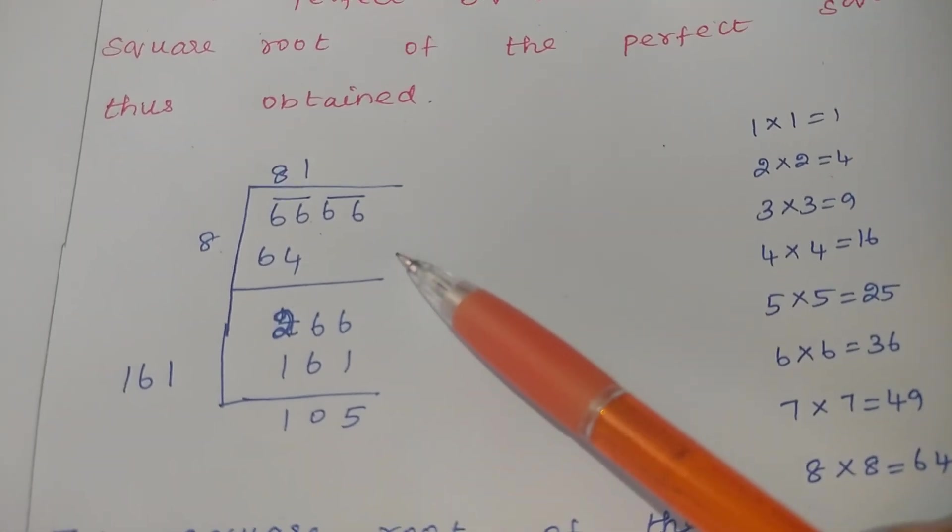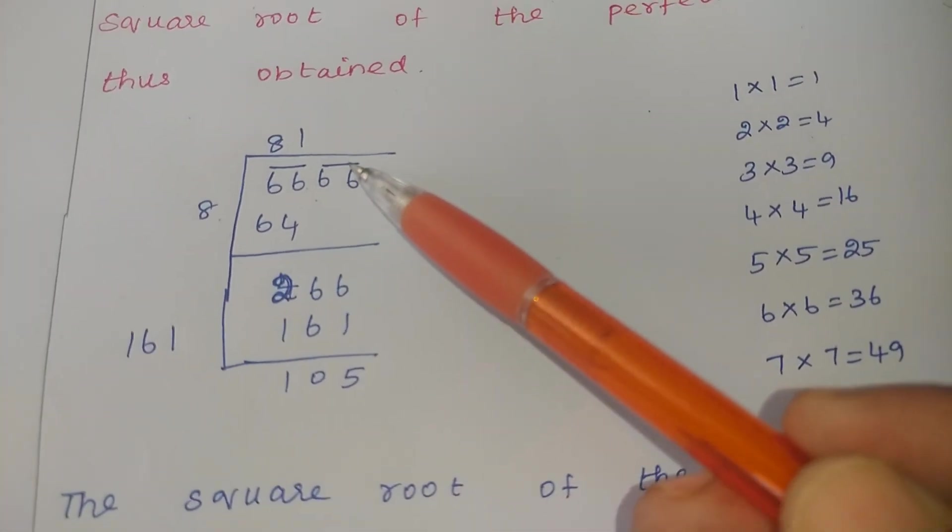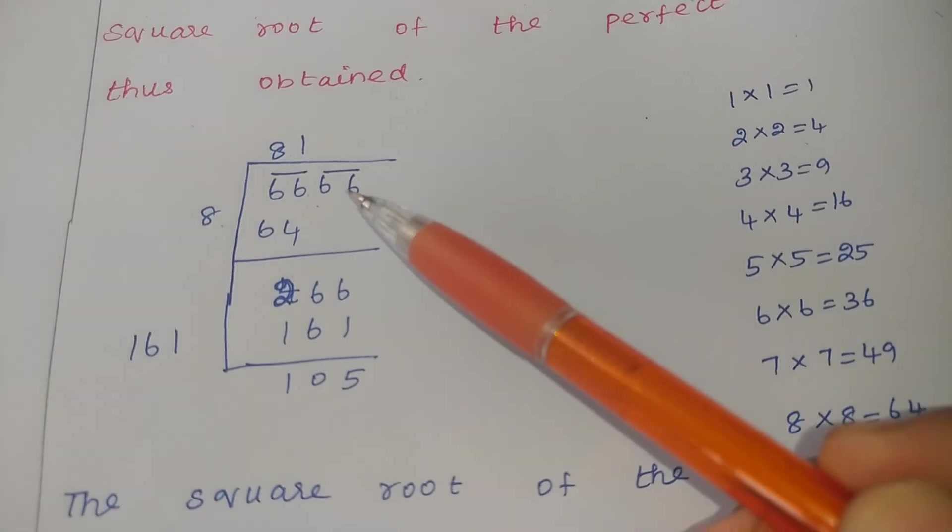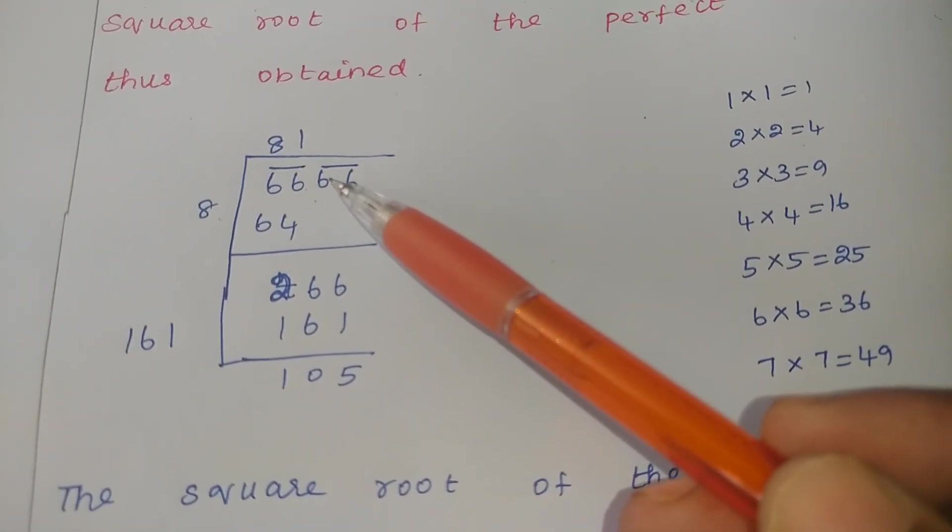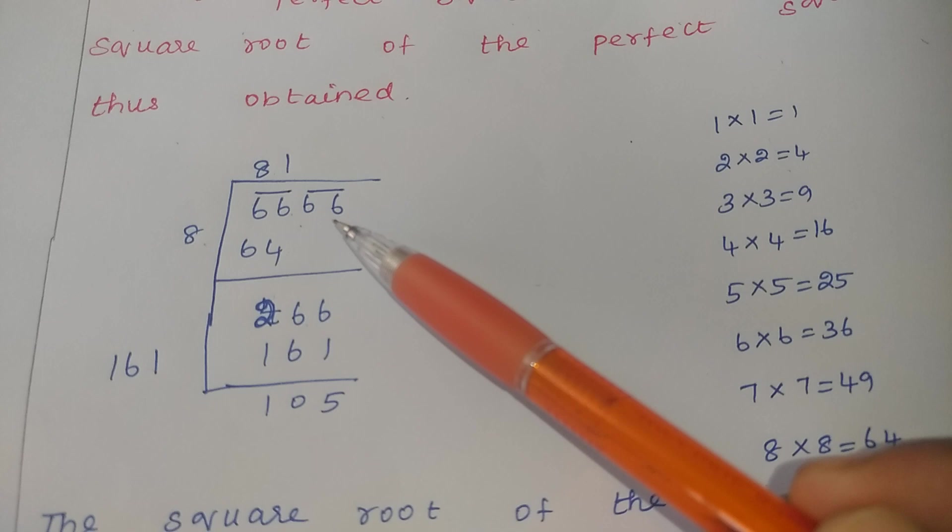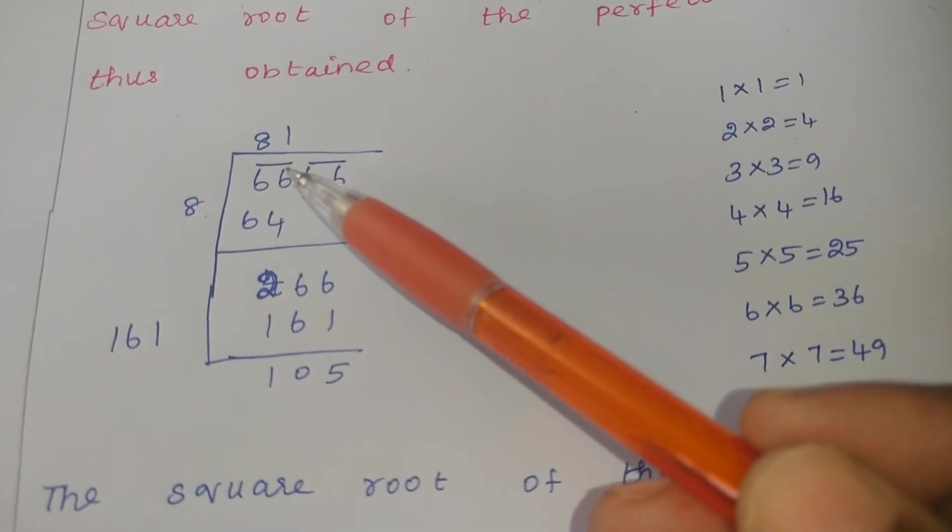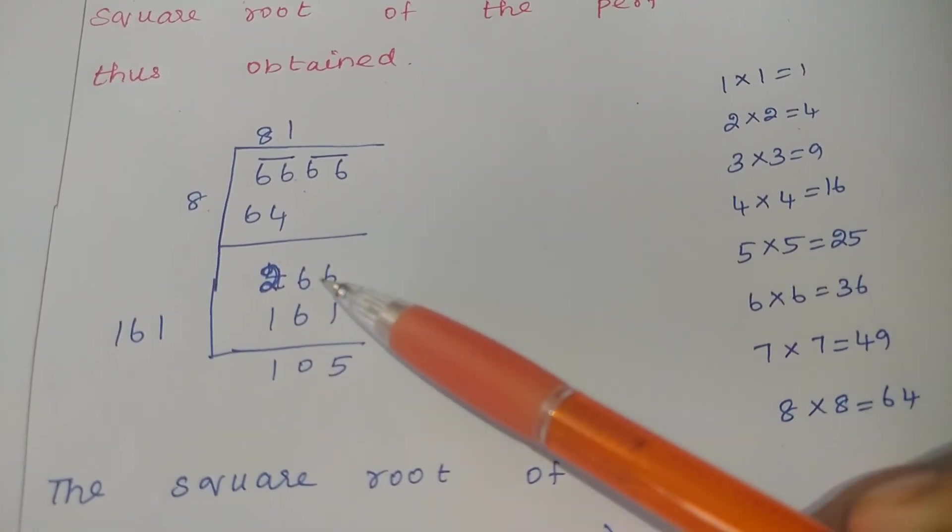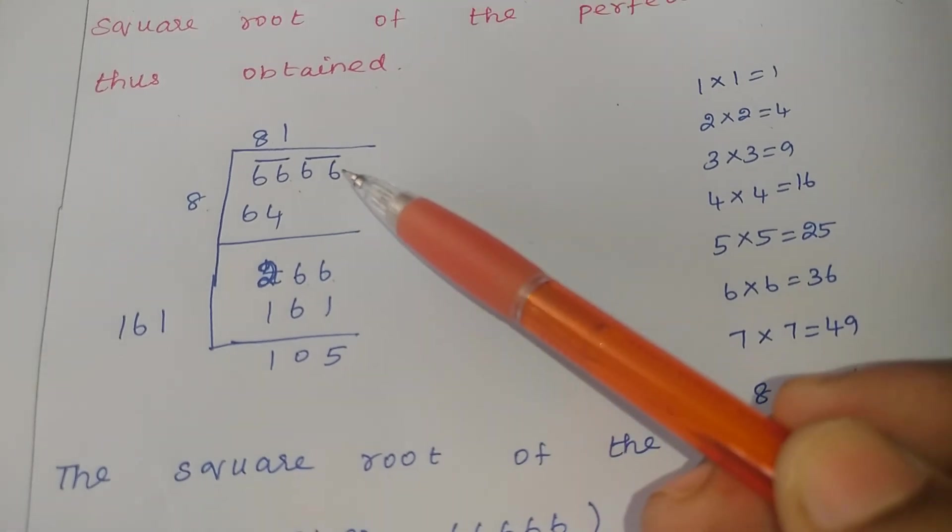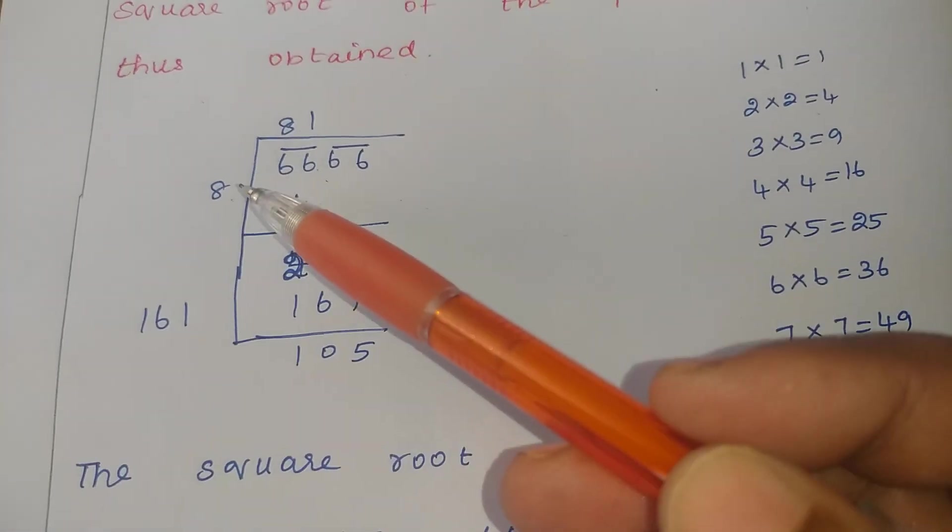Next step, what do you want to do? Here 66 is there. So the 66 you want to take down. Why? Means in division, like division will not take one one values. It's a long division.